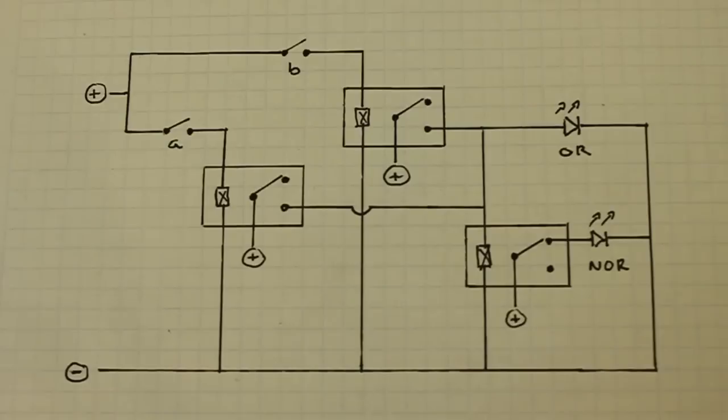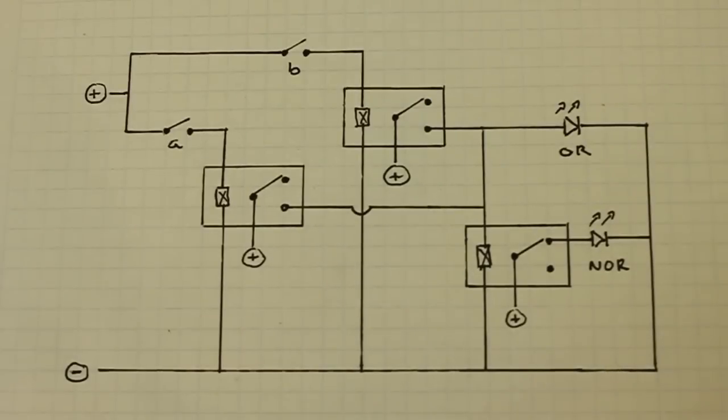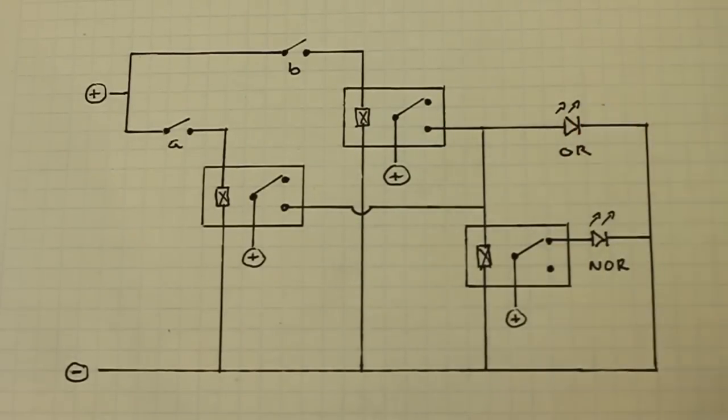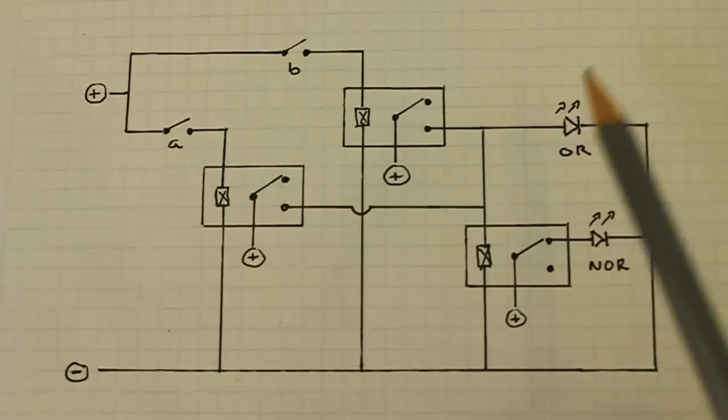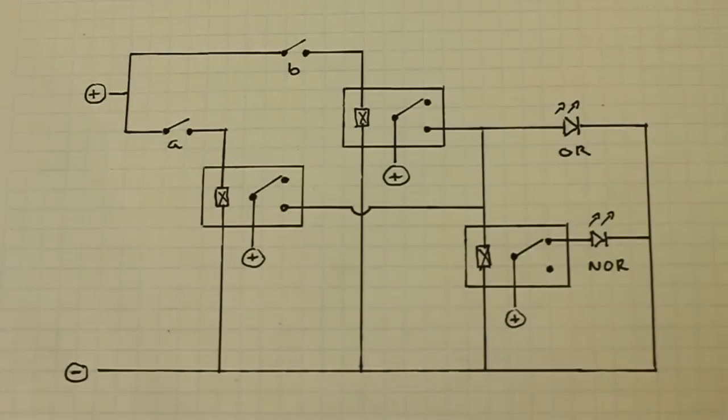Let's see in the first position, zero, zero, with both switches A and B open, we see that there is no current flowing in the OR LED, which is off, but current flows through the NOR LED, which is on.